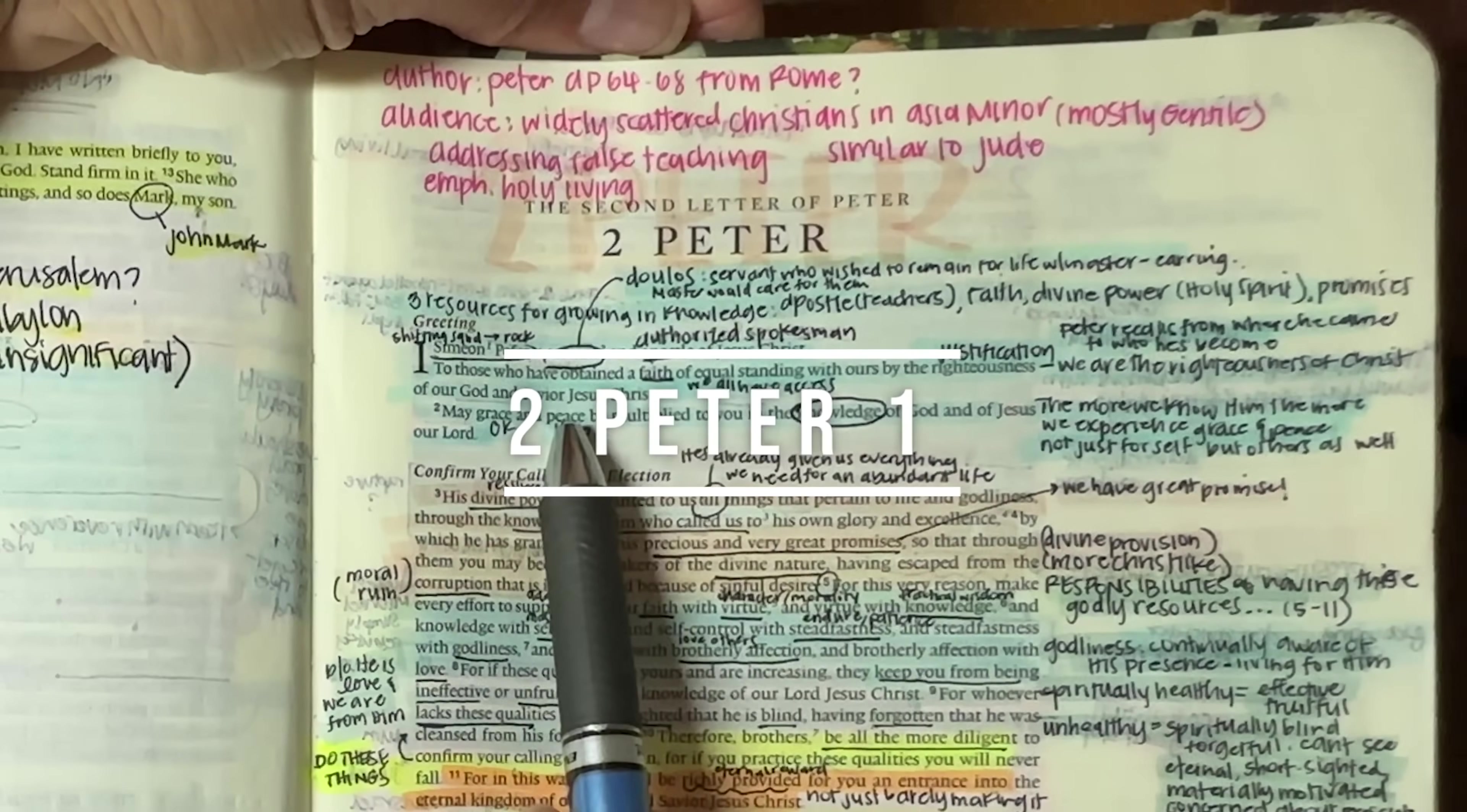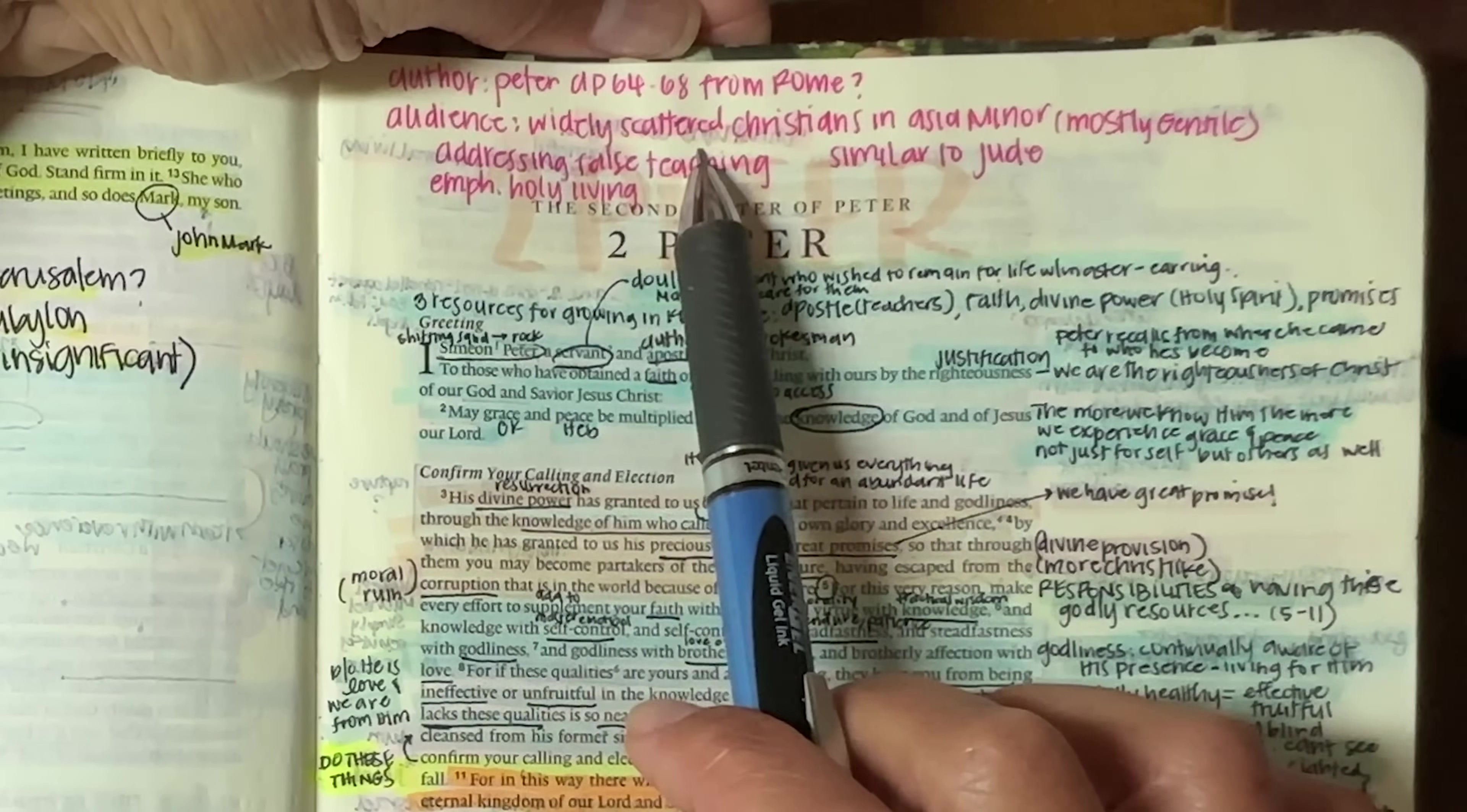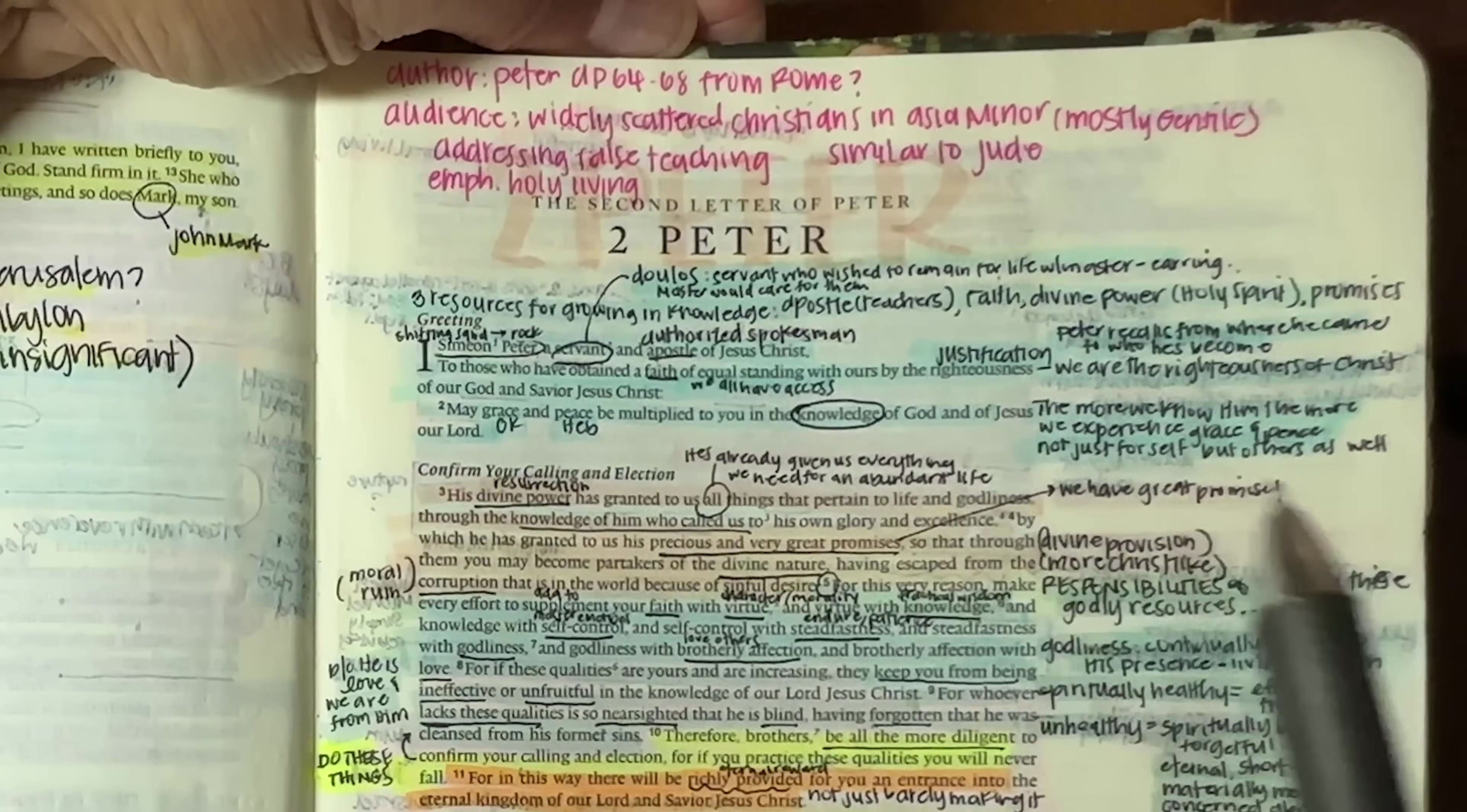So back in Peter, his epistle. So 2 Peter here, written somewhere between AD 64 and 68, possibly written from Rome. Of course, he is the author, the audience being the widely scattered Christians in the Asia Minor. So these are mostly Gentile Christians.